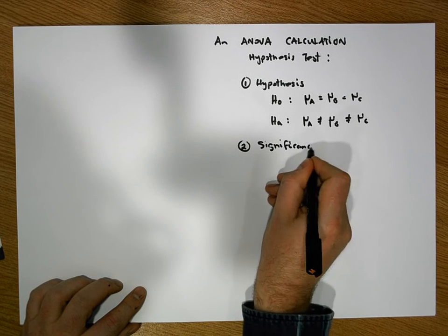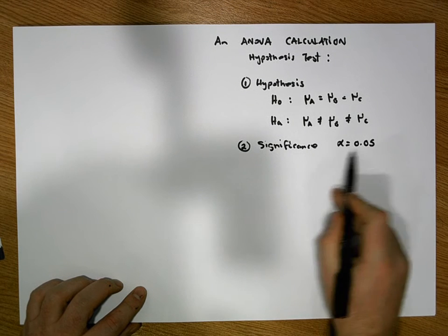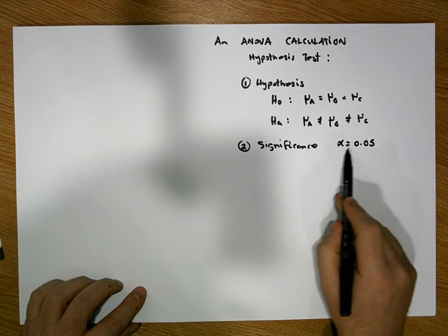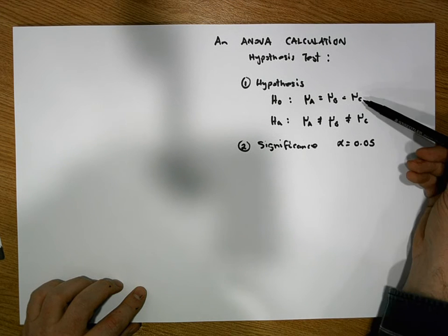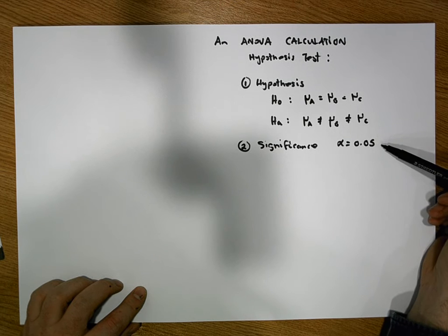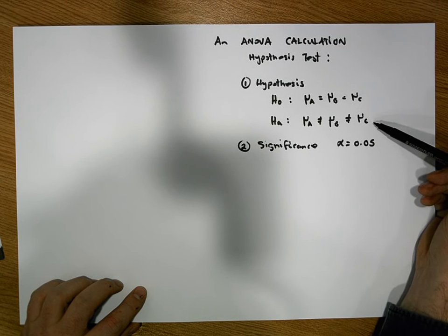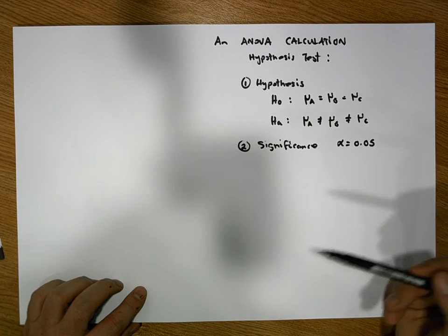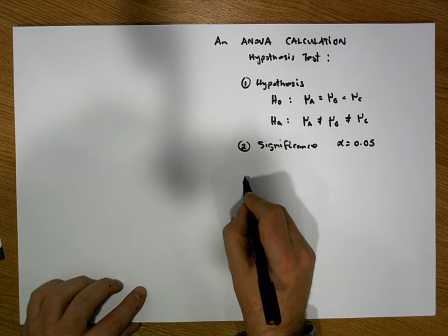We choose a significance level of alpha equal to 0.05. From an interpretation perspective, this controls for committing a Type I error. What we're saying is that if we do reject H0 in favor of HA, we'll only be wrong five percent of the time — or equivalently, we'll be 95 percent confident that we've made the right decision, but we might be wrong five percent of the time.